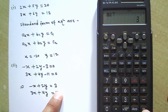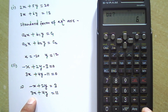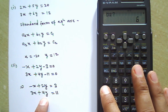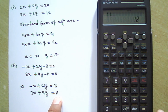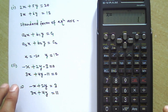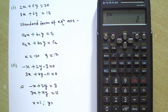Press minus 1 then equal. Then b1 is 2 — press equal. Then c1 is 3 — press equal. Then a2 is 3 — press 3 then equal. Then b2 is 4 — press 4 then equal. The last value c2 is 11 — press equal. You get the value of x = 1. Press equal again and you get y = 2.